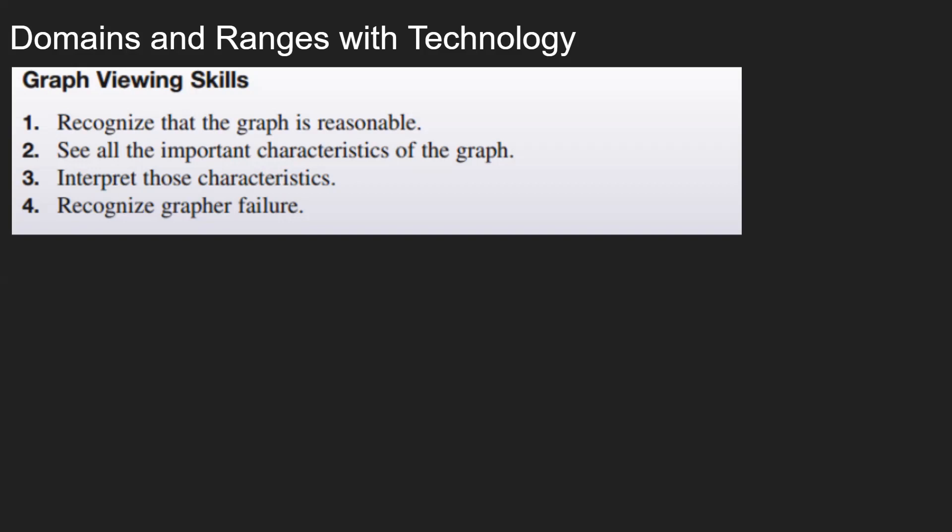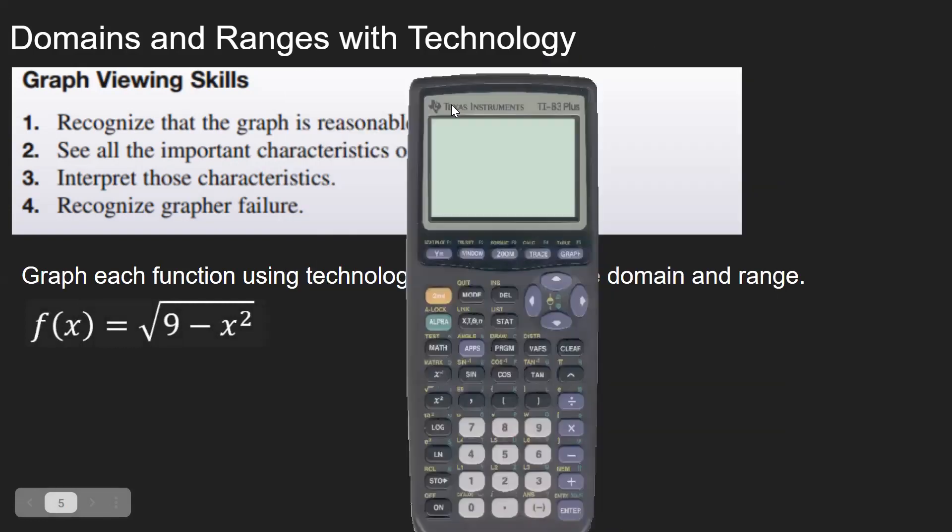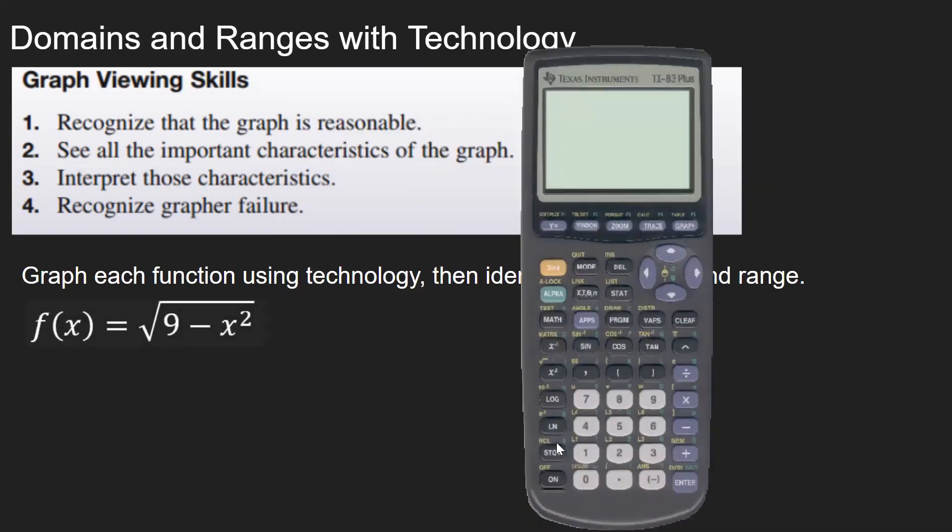You want to be able to interpret those characteristics, like do you have a vertical asymptote, do you have a point where the graph jumps or skips, and recognize situations in which the graph may fail. So we want to graph each function and then use the technology to identify the domain and range.